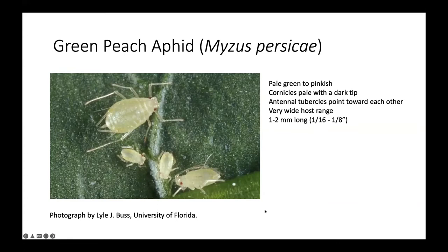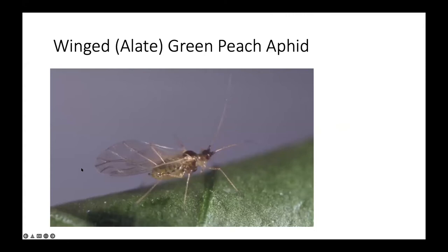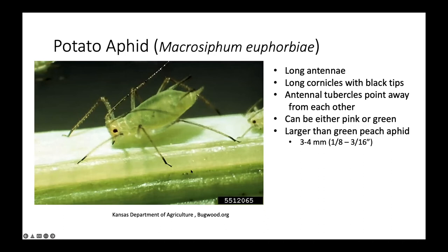There are two aphids we're likely to see on tomatoes. Green peach aphid is pale green to pinkish in color, with cornicles that are pale with a dark tip. The antennal tubercles tend to point toward each other. These aphids have a very wide host range — not just tomatoes — and are relatively small. They have both winged and wingless adults. The other species we'll find is potato aphid, which has long cornicles with black tips and long antennae, with antennal tubercles that tend to point away from each other. These can be either pink or green but tend to be larger than green peach aphid.